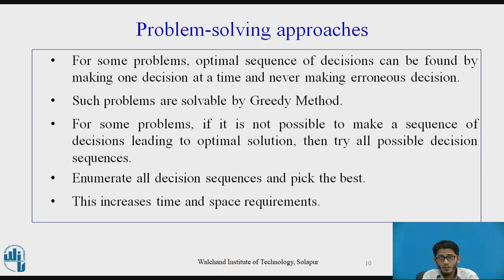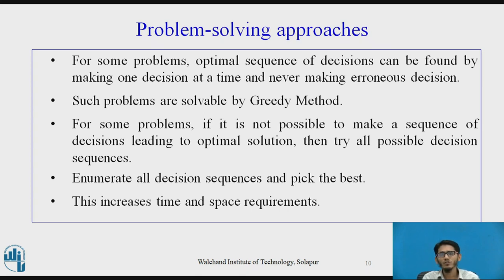For some problems, an optimal sequence of decisions can be found by making one decision at a time without error — this is the greedy method, which generates only one decision sequence. But for other problems where that is not possible, we try all possible decision sequences, enumerate them, and choose the optimal one. This can increase time and space requirements significantly.